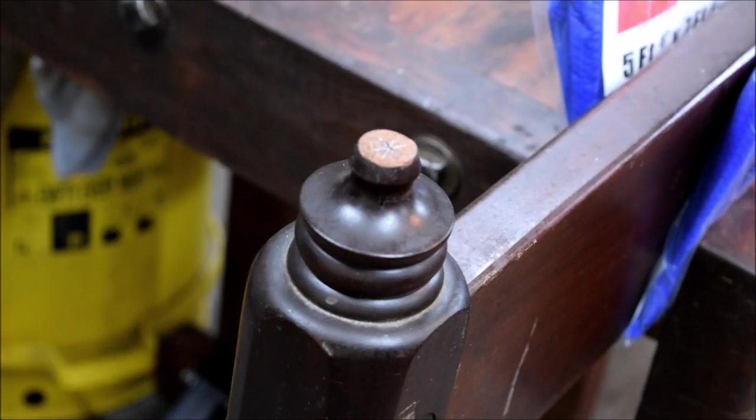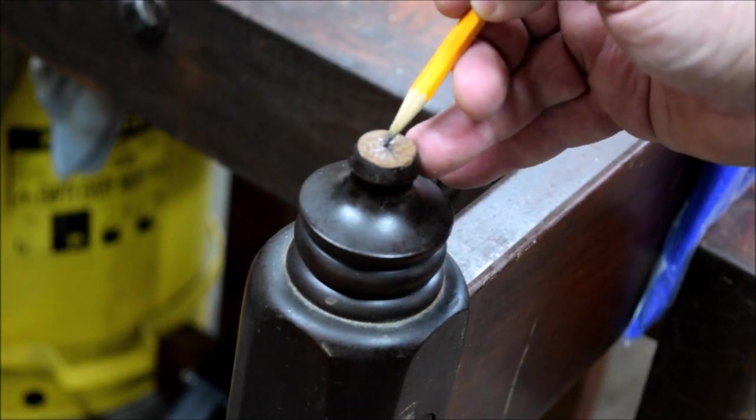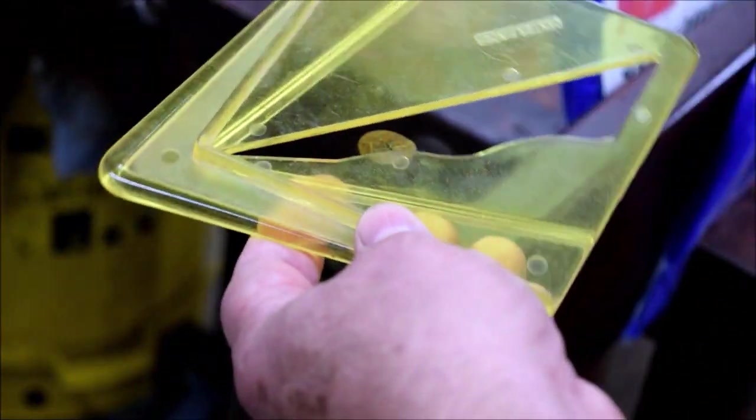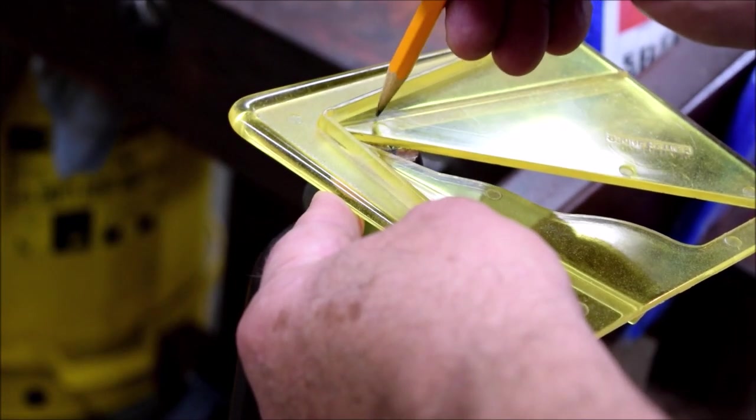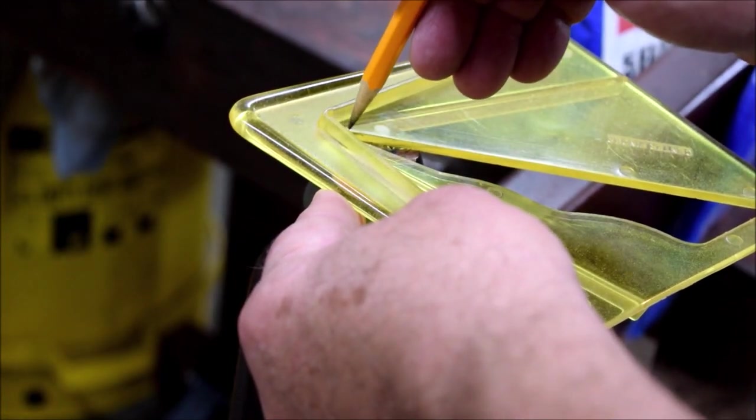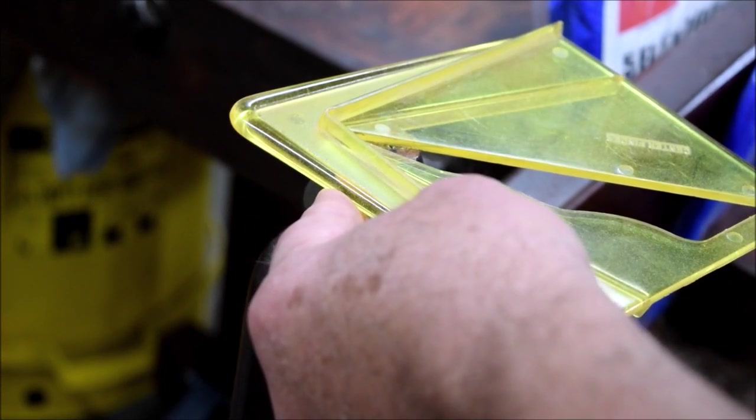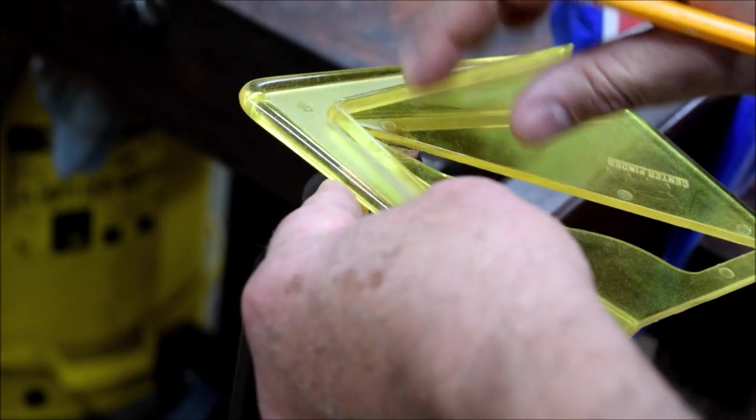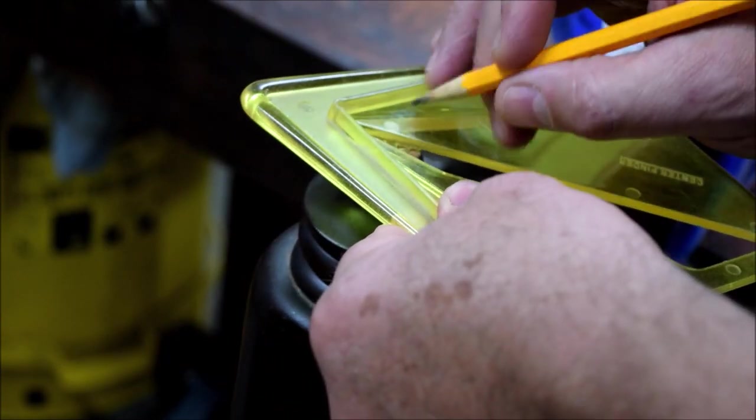Now, the next step is to find the center of this dowel and we do that using this tool here. And basically what it does is it rests on the outside curves of the circle and gives you a perpendicular line here. And I guess what, the perpendicular line of intersecting cords, I don't know, some geometry thing that I've forgotten since I was a kid. But anyhow...